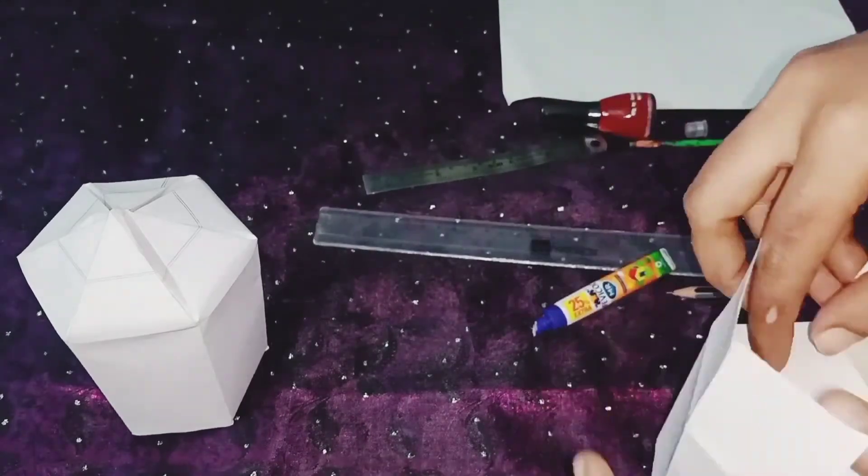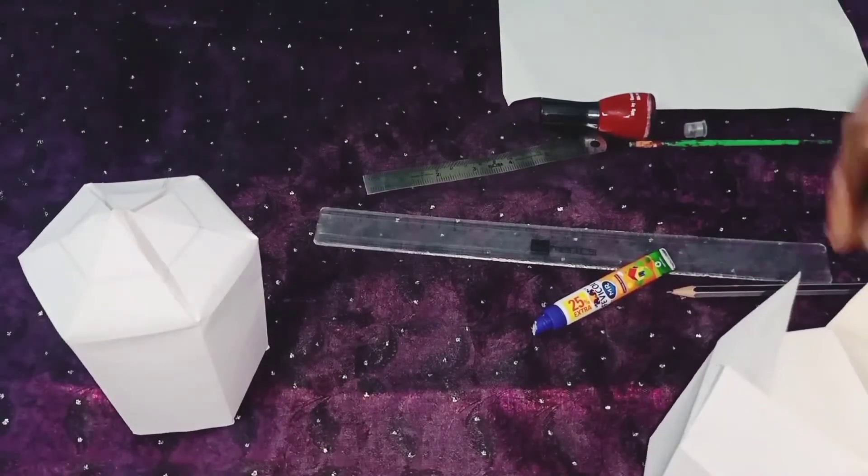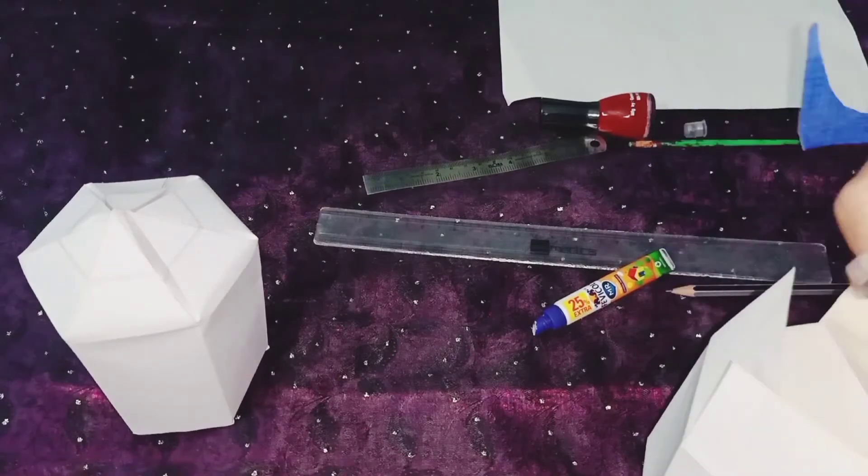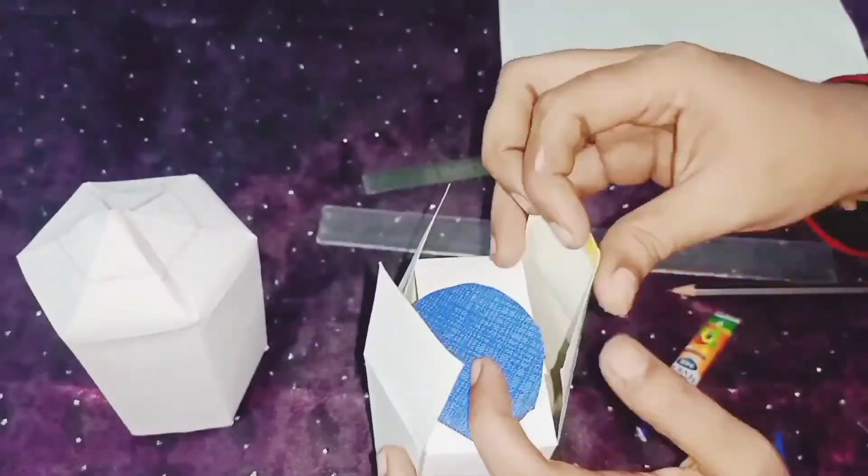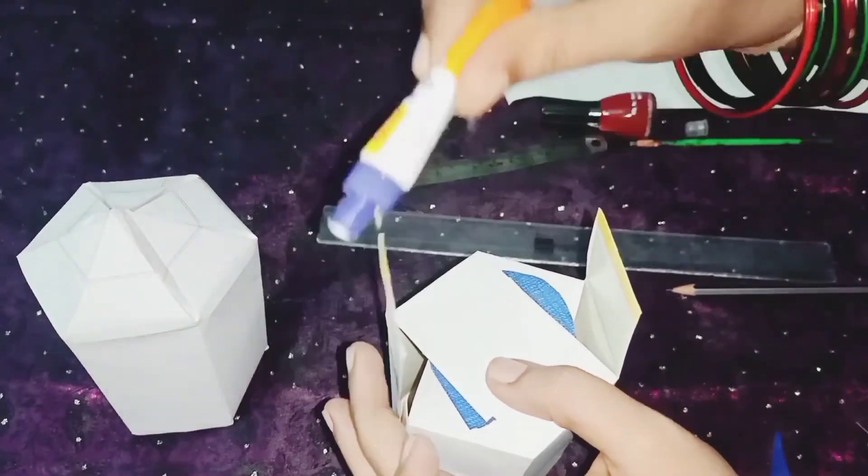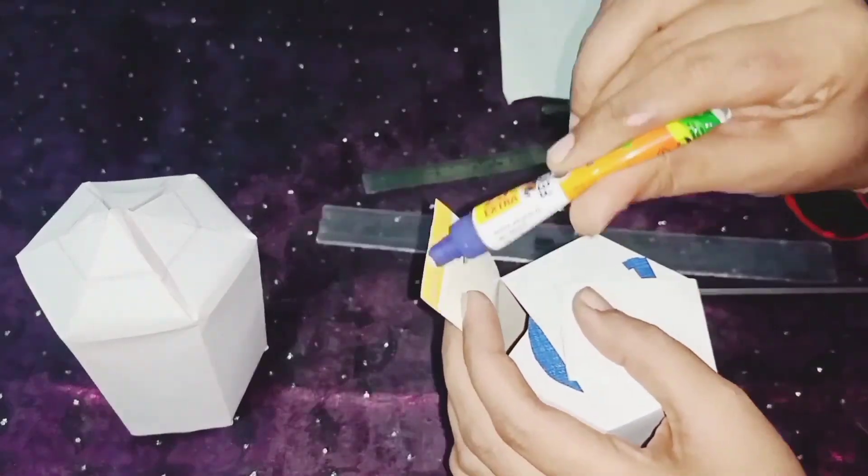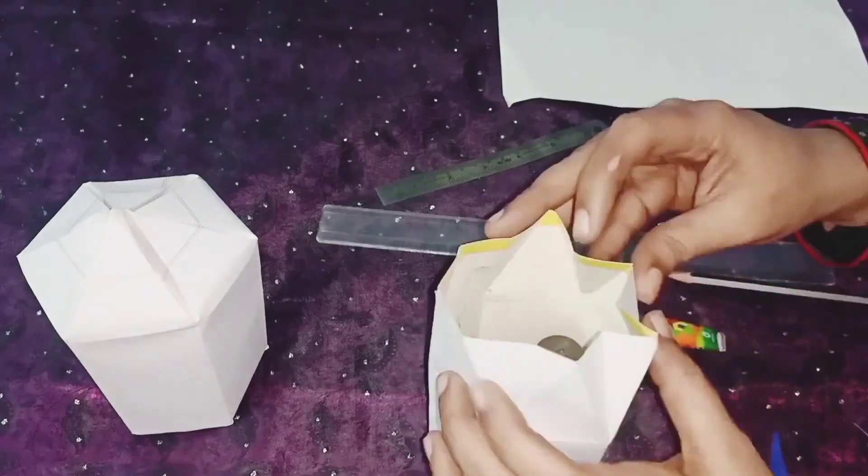Now apply the glue, edge of the paper and cover it. You can add extra paper children for lifting weight. Then paste it. You can add extra decorate things in this box children. It comes out well. Cover the top portion.